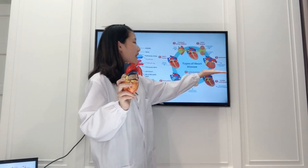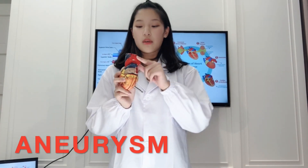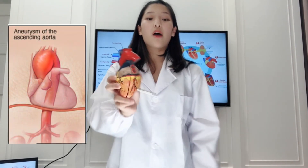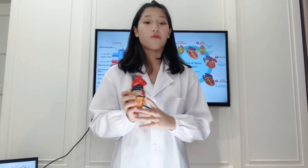Third one is aneurysm. Aneurysm is when this part of the aorta is swollen up. And when it is swollen up to a certain extent, it could pop off, and that could normally lead to death, because it is way too unplanned and impromptu for the heart.